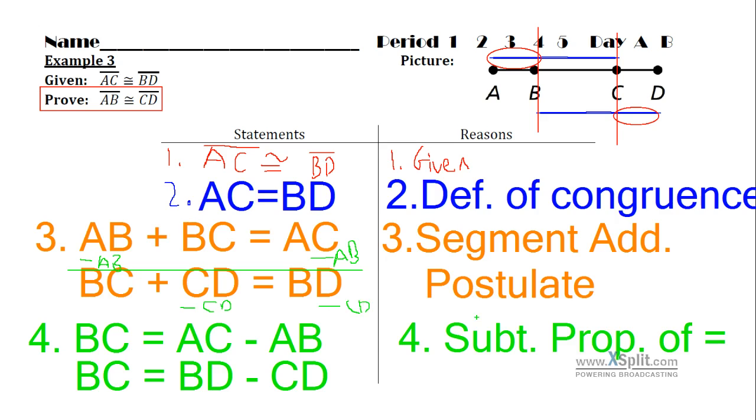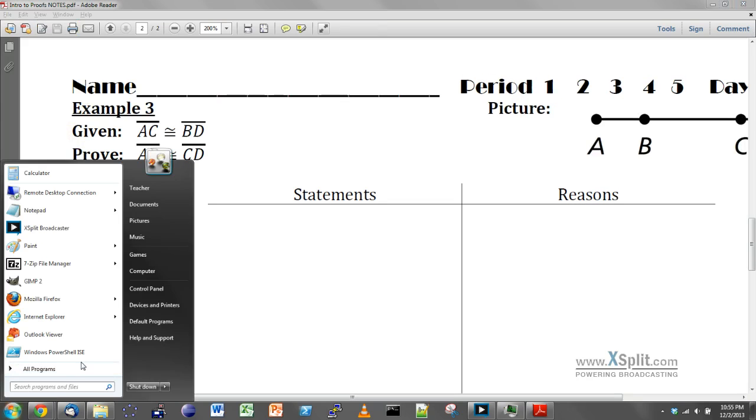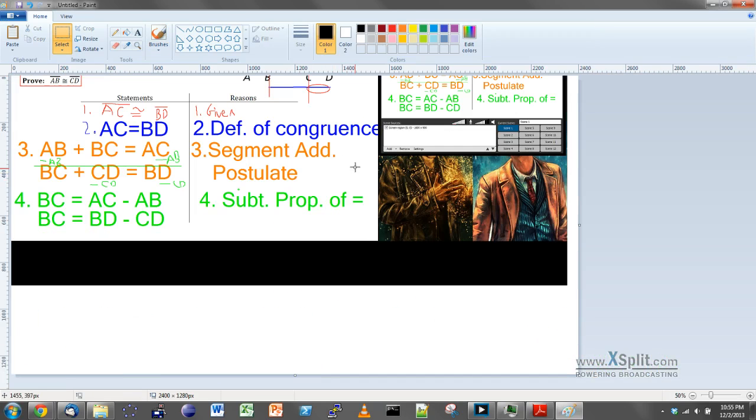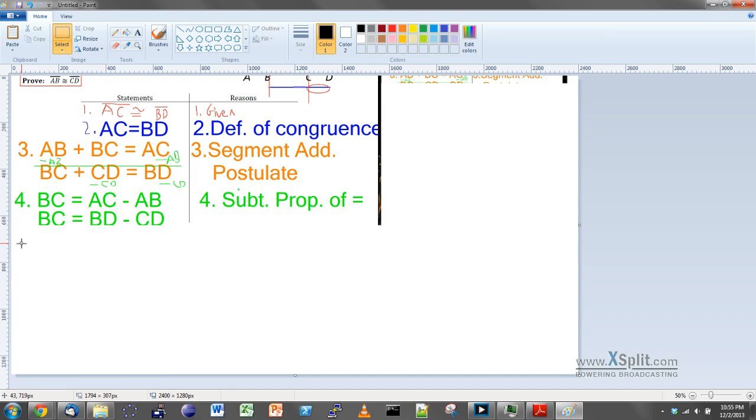I'm going to go ahead and do that in green. This first equation, I'm going to say BC is equal to AC minus AB. Alright, all I did was subtracted AB to both sides of this first equation. And then the second equation is going to follow suit. I could say that BC is equal to BD minus CD. Alright, and what I'm doing there, that's the subtraction property of equality. Subtraction property of equality just says I can subtract the same thing on both sides. With that second one, I was just subtracting CD on both sides.